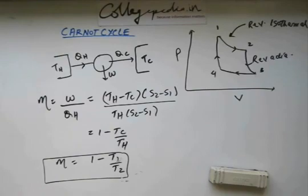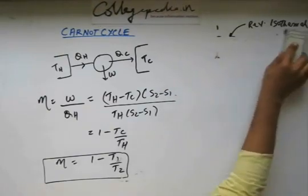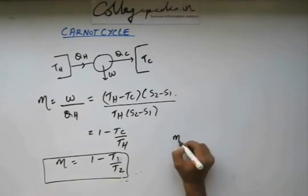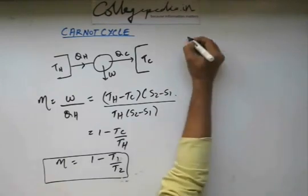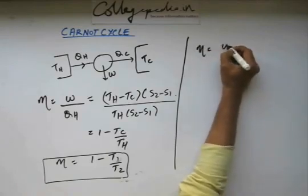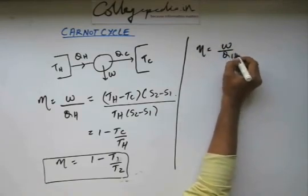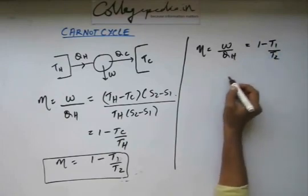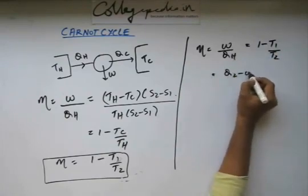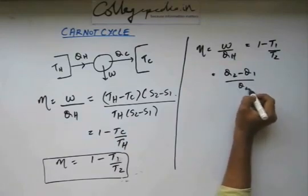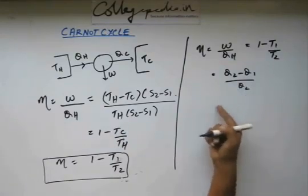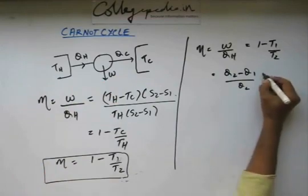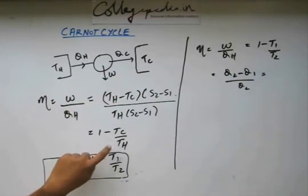This is the result of the Carnot cycle, but how are we going to relate this with entropy? Efficiency is equal to W upon QH. Efficiency we have found out as 1 minus T1 by T2. W is equal to Q2 minus Q1 upon Q2. I am writing QH as Q2 and QC as Q1, because I have written TC as T1 and TH as T2.